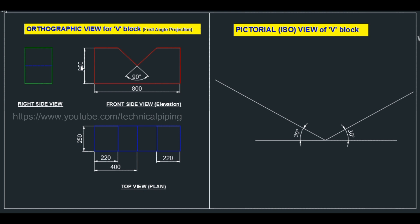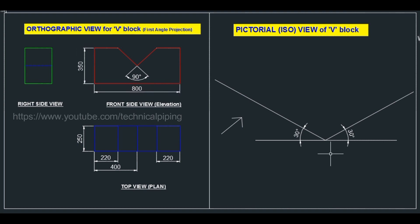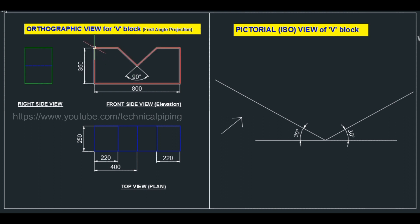First we will consider the front side view. So draw the front view - the dimensions available are: length is 800 mm and height is 350 mm. This arrow indicates the front view of the V-block assembly. Some dimensions for this length and this dimension we can get from the top view.